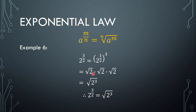From here we can simplify as the square root of 2 to the power of 3, which leads to our conclusion that the denominator is the root and the numerator shows the power.